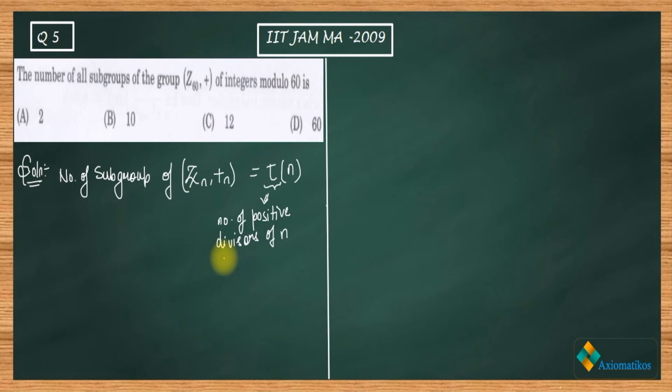So number of subgroups of Zn is equal to number of positive divisors of n. This is the result that we need for this question. We have 60, so we need positive divisors for 60. Firstly, let us do the factorization of 60. You can write this 60 as 2·2·3·5, or 2²·3·5.